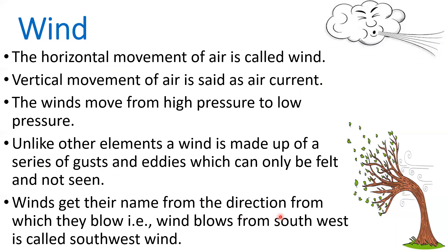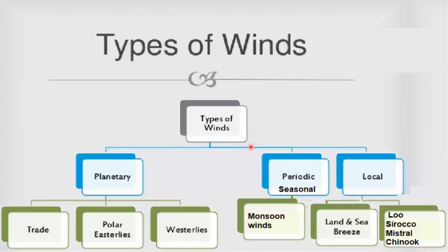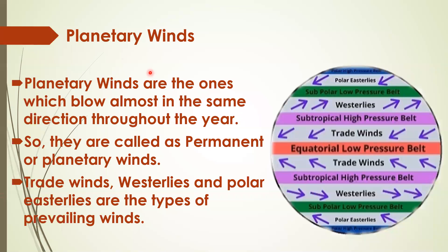Winds get their names from the direction from which they blow — winds blowing from the southwest are called southwest winds, and from the northeast are called northeast winds. There are three types of winds: planetary winds, periodic or seasonal winds, and local winds. Planetary winds are also called permanent winds because they blow in almost the same direction throughout the year. Examples of planetary winds include trade winds, westerlies, and polar winds.